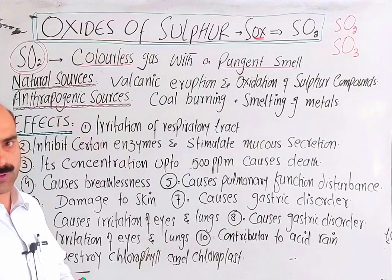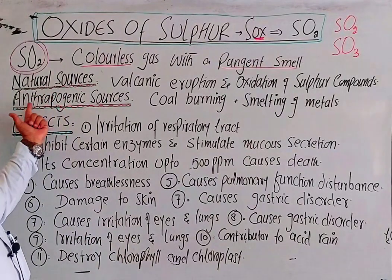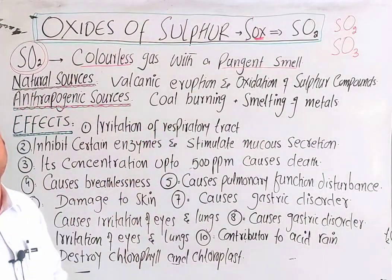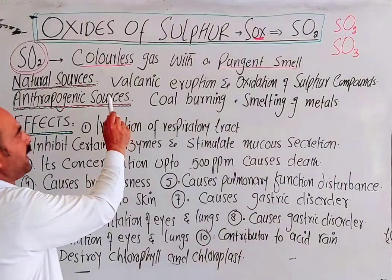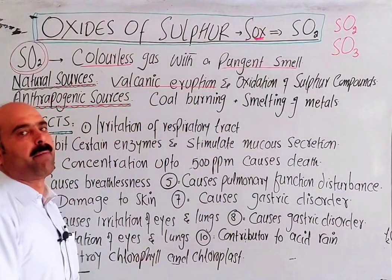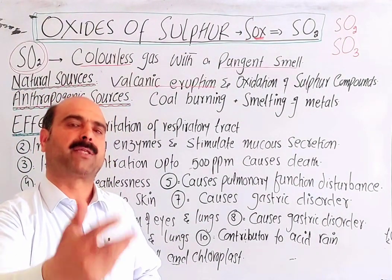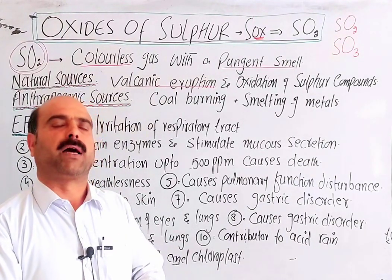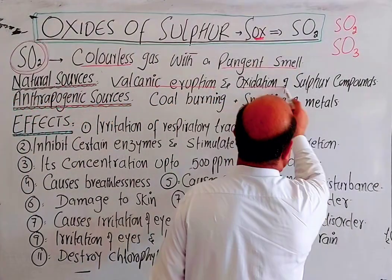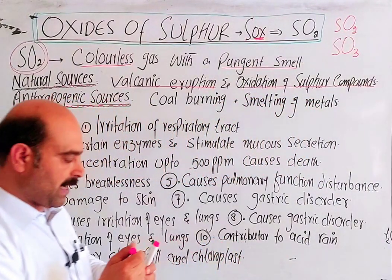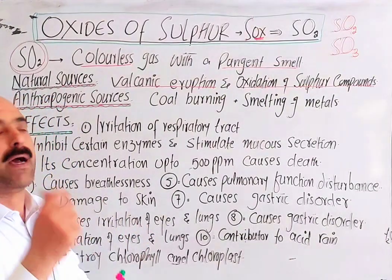There are two main sources of Sulphur Dioxide: natural and anthropogenic. Anthropogenic means man-made. The natural sources are volcanic eruptions. Additionally, the oxidation of sulphur compounds is a natural source. The sulphur compound hydrogen sulphide, H2S, is oxidized in the presence of oxygen.